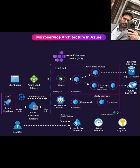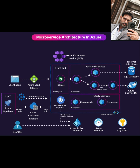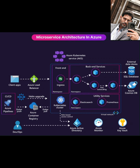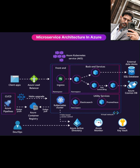Getting your code from development to production smoothly is critical. That's where CI/CD comes in. Azure Pipelines, part of Azure DevOps, is a great tool to automate your build, test, and deployment processes. And Helm, a Kubernetes package manager, simplifies defining, installing, and managing your applications on the cluster. This automates pushing your Docker images and deploying your Helm charts.